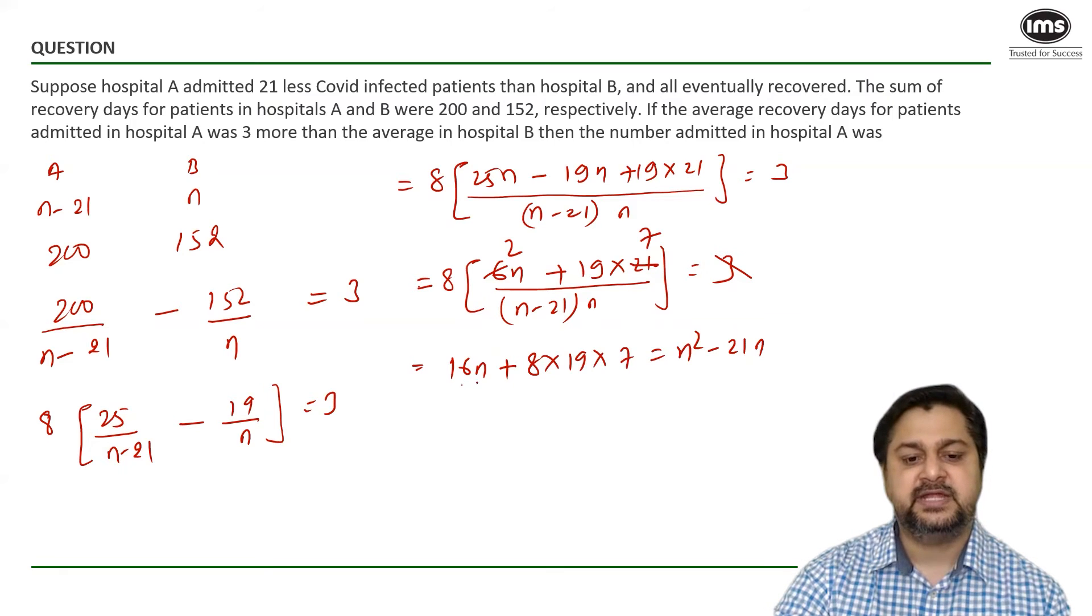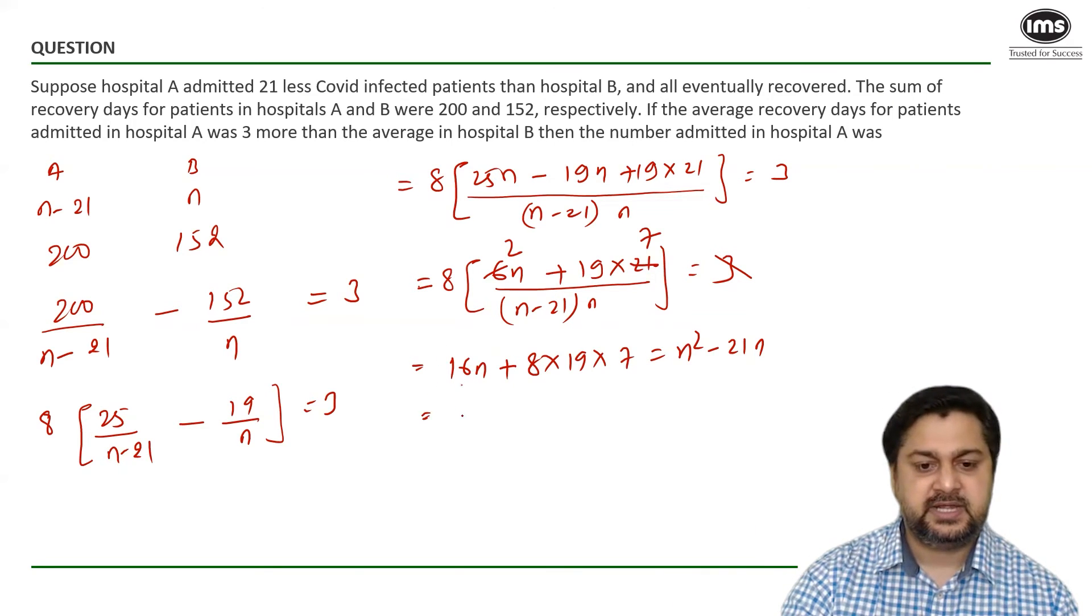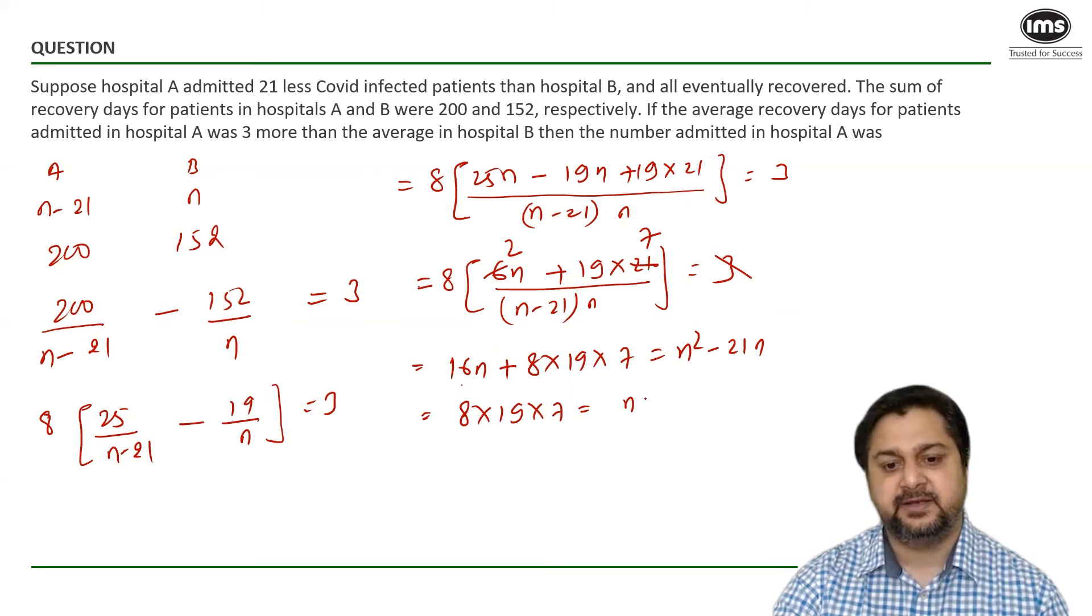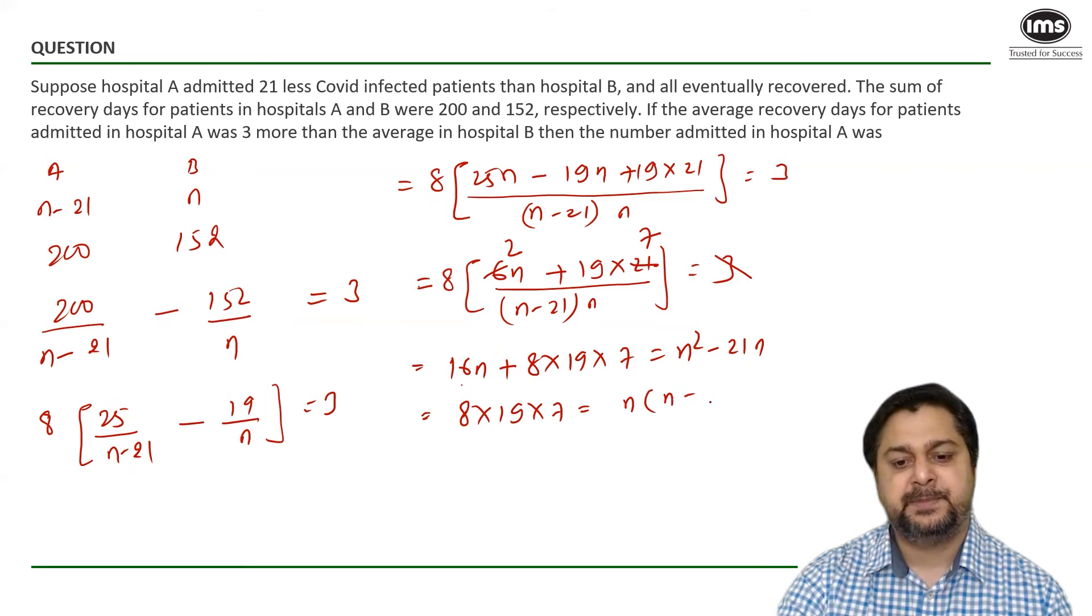And on the other side we would have N squared minus 21N. Now we've got N here. Let's take this N on the other side. We would have 8 into 19 into 7 is equal to N squared minus 37N. So I can take this N common. It would make it N minus 37.